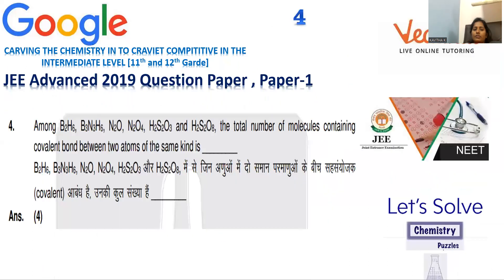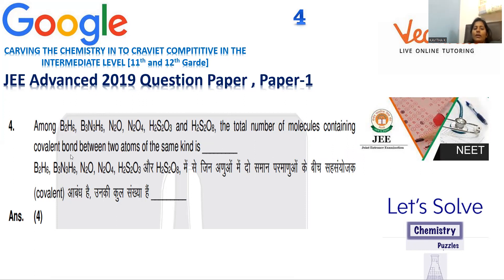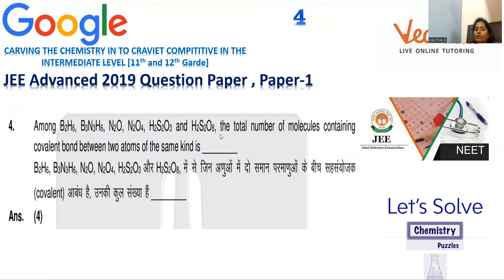Move on to question number four, also collected from JEE Advanced 2019 question paper, paper one. It is purely inorganic chemistry involving compounds of boron, nitrogen, and sulfur. Among the molecules B2H6, B3N3H6, N2O, N2O4, H2S2O3, H2S2O8 — six molecules are given. The question asks: how many of these molecules contain a covalent bond between two atoms of the same kind? If nitrogen is bonded to another nitrogen, that counts. We need to identify how many molecules have same-atom bonding.